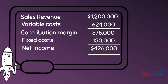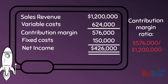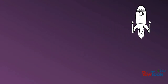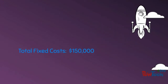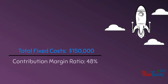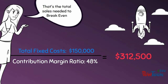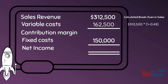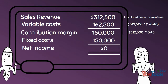Let's look at some data for our rocket ship line. We can calculate the contribution margin ratio for our rocket ships as 48% without knowing the individual prices. If we want to know the breakeven point for our rocket ships, we can take the total fixed costs and divide them by our contribution margin ratio to determine the breakeven point. We can then go back to our CVP income statement and check our work to find that we did calculate the correct breakeven point.